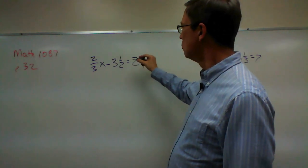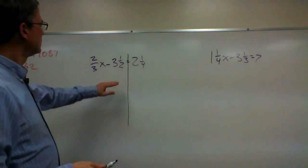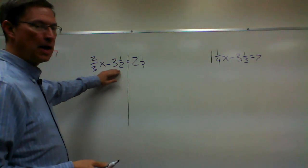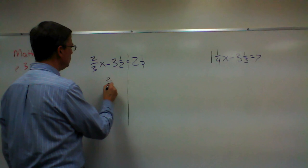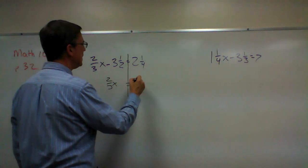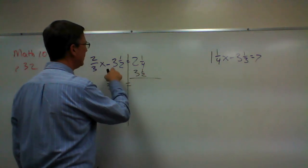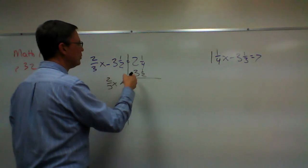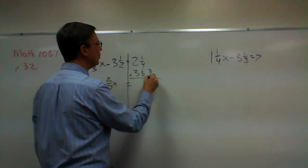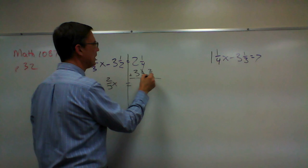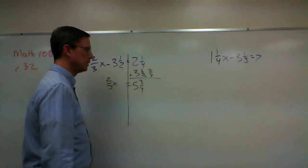Remember, we're going to draw the line through the equals to divide it into two halves, and we're going to bring the three and a half over to the other side. So we end up with two thirds x equals, and I'm going to add three and a half to the two and a fourth. But remember, you have to get a common denominator. So the half would be two fourths, and now I can add and get five and three fourths.